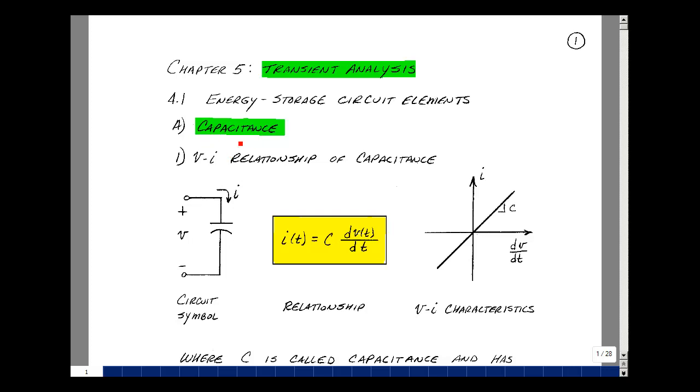Our next element is called capacitance. The circuit symbol is shown here with a straight line and a curved line. The voltage across it will call V, and we'll show the current such that it's absorbing power. Now, the relationship between voltage and current for this element is quite different than our previous circuit elements. For our capacitance, the current is related to the derivative of the voltage across it by a scalar. That scalar we're going to call capacitance.